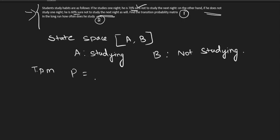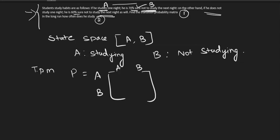When you are writing P, you write the labels A, B across and A, B down. What is the first case? If he studies one night — that is A — he is 70% not to study. Not to study means B. So A to B, the transition is 70%.